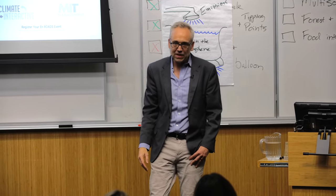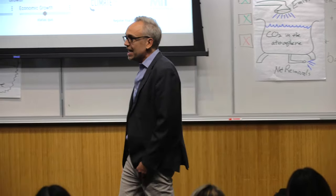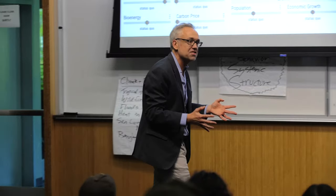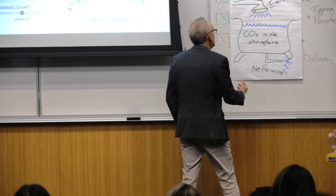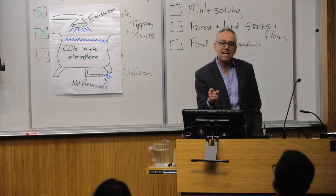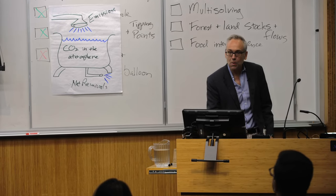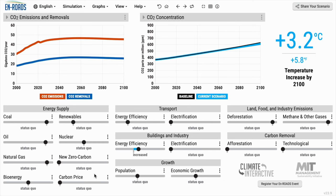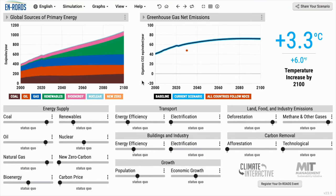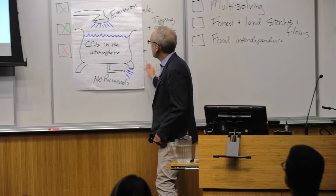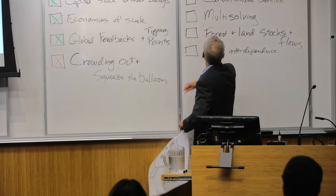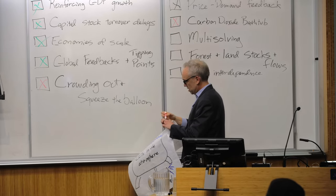Sulfur dioxide, nitrous oxide, methane — none of these behave like CO2. The long lifetime of carbon dioxide makes it such that the first solution you mentioned — net zero — is exactly what's required. That's why we have to get those emissions down, down, down. The carbon bathtub is yet another of the important systemic structures driving behavior over time.